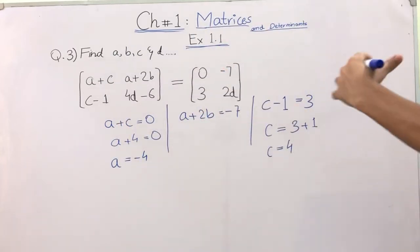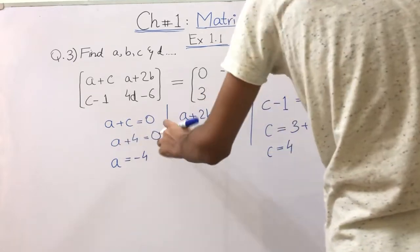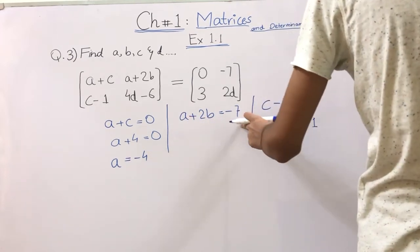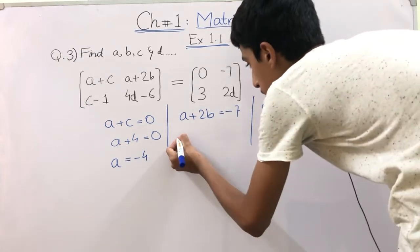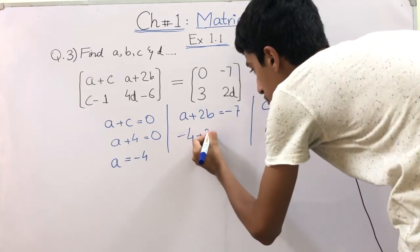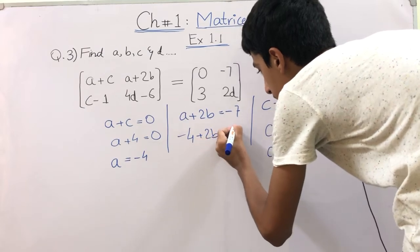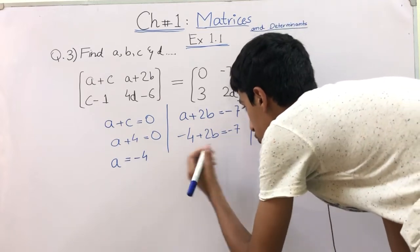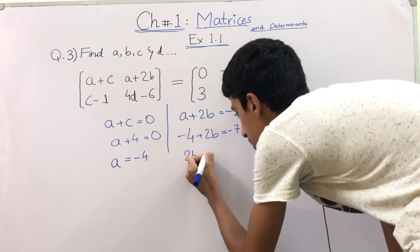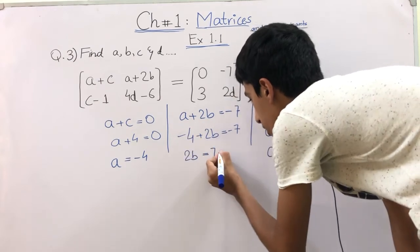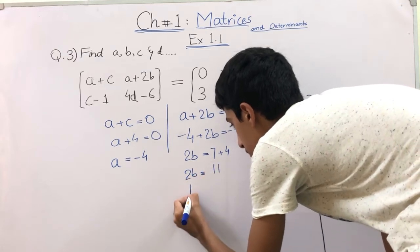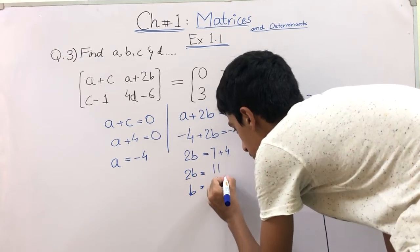Now for equation 2, A plus 2B is equal to minus 7. We have minus 4, so minus 4 plus 2B is equal to minus 7. We subtract minus 4 from both sides, so 2B is equal to minus 7 plus 4, which is minus 3. B is equal to minus 3 over 2.